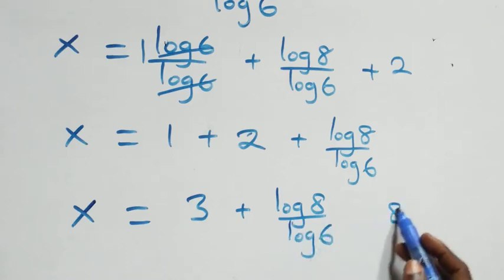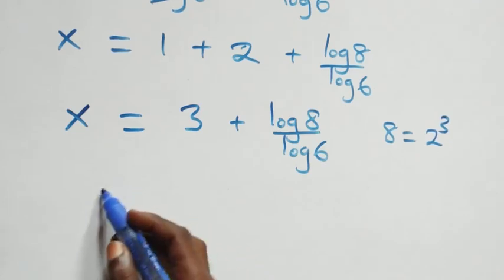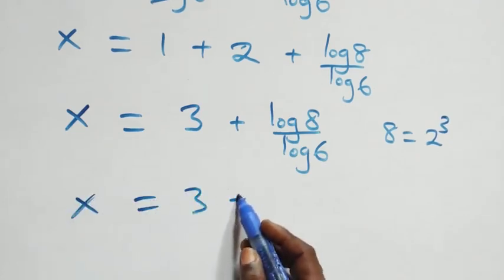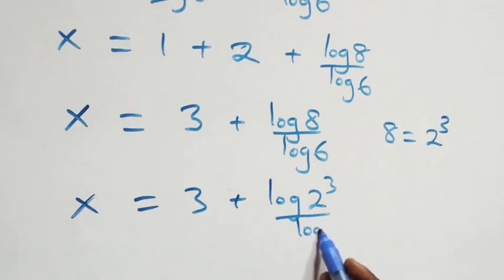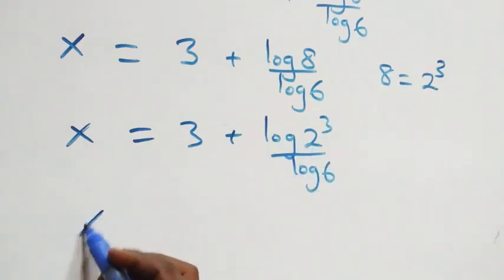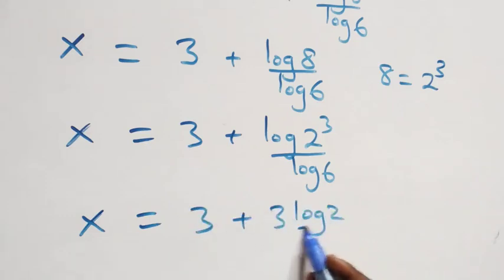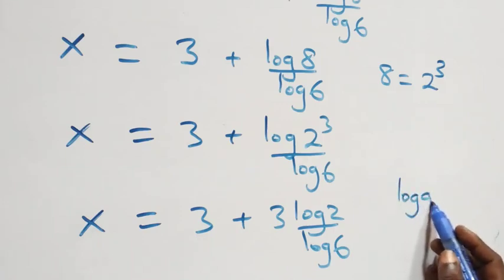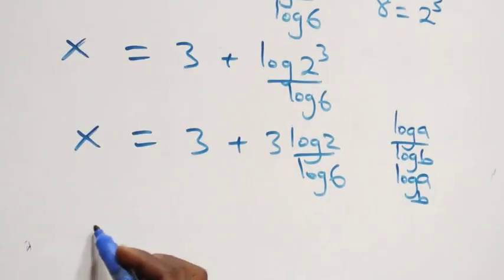Eight can be written as two times two times two, which is two raised to the power three. So this becomes x equals three plus log of two raised to power three over log six. Applying the power rule, the three comes down: x equals three plus three log two over log six. Then applying the change of base formula, where log a over log b equals log a to base b, we get x equals three plus three log base six of two.